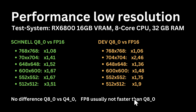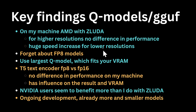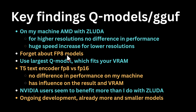In most cases the Q8O model was even faster than the FP8 model. My key findings regarding GGUF and the new models: on my machine there was no difference in performance for high resolution, though that might be different with your GPU. The performance increased significantly for lower resolutions. I will not use the FP8 model again — it simply makes no sense now that I have the Q8O model and the other Q models.